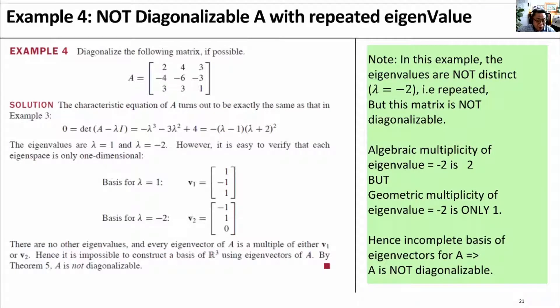This is example 4. Example 4 is similar to example 3. However, in this particular case, this 3x3 matrix is not diagonalizable.